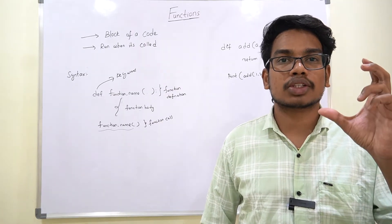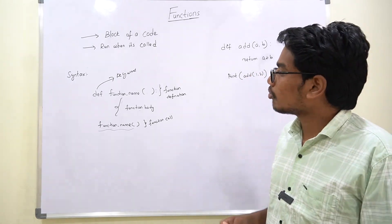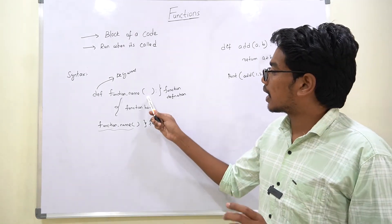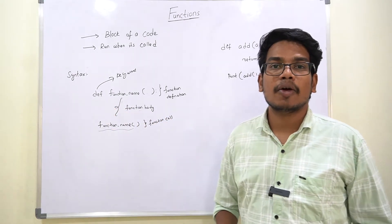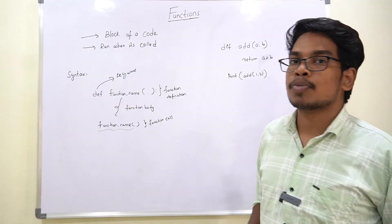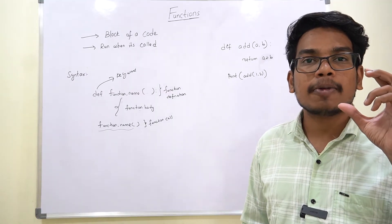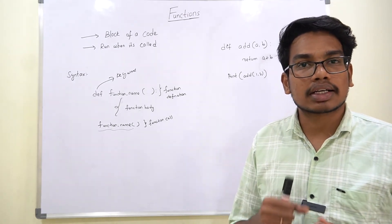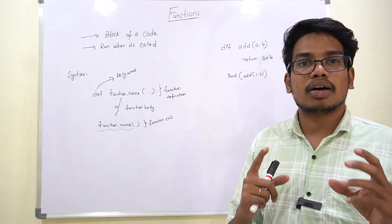You will write the basic building block of code. In the syntax, def is the keyword, function name is the function name, parenthesis, colon. So in the first line, we have done the function definition. In the next section, it is the function body. In this function body, we can have condition statements, looping statements, or something similar.